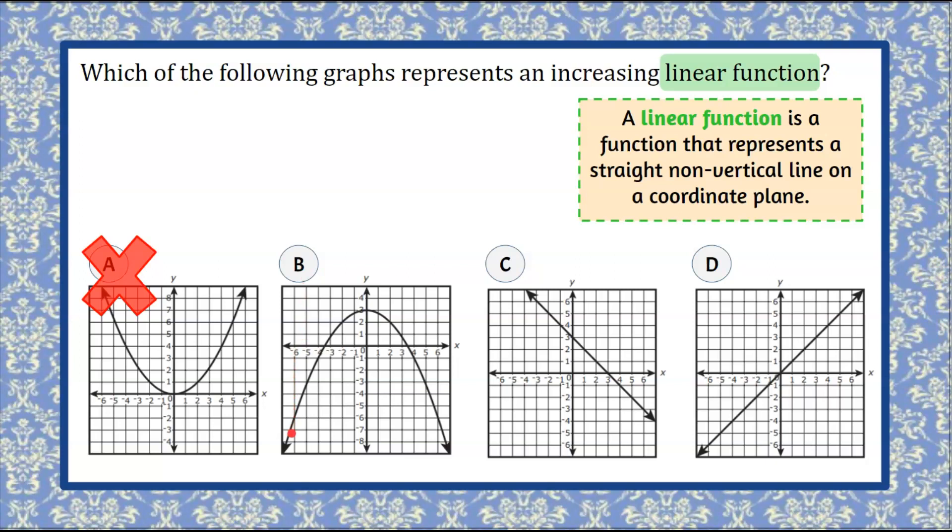As we look at graph B, we can see that that is also a parabola. It's been reflected in the x-axis, and it's not a straight, non-vertical line, so we can rule out answer choice B.